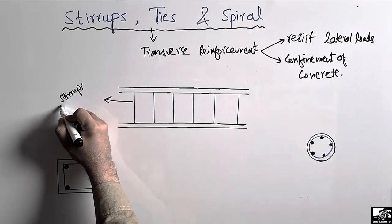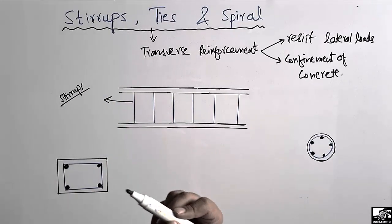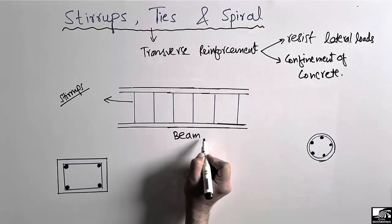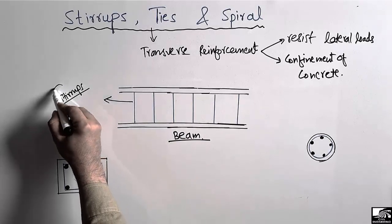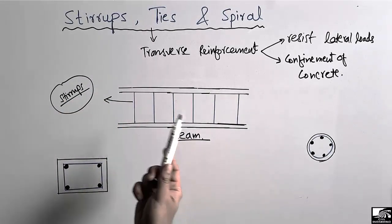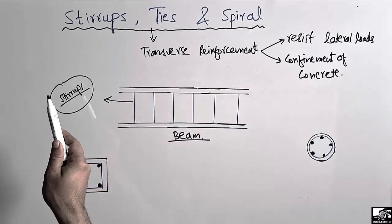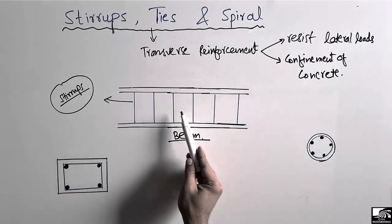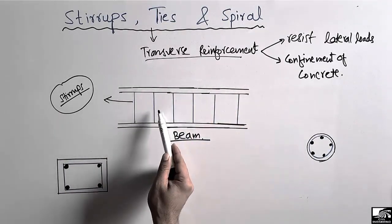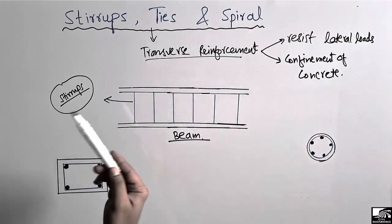So what are stirrups? The transverse reinforcement that is used in the construction of beams is known as stirrups. The purpose of stirrups in beams is to resist the lateral loads and for the confinement of the concrete.